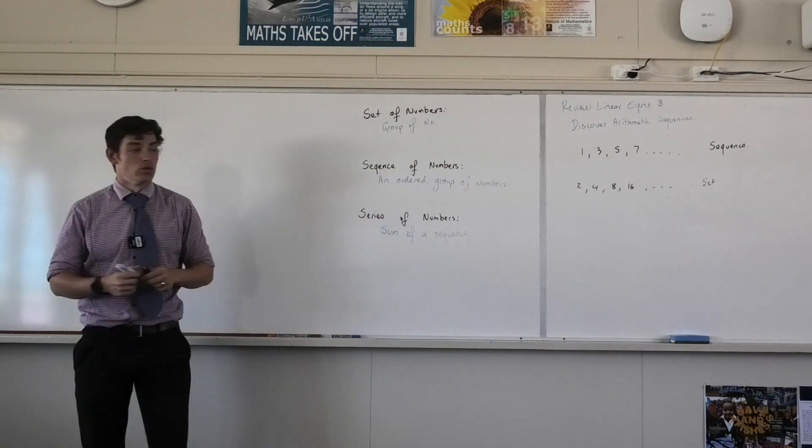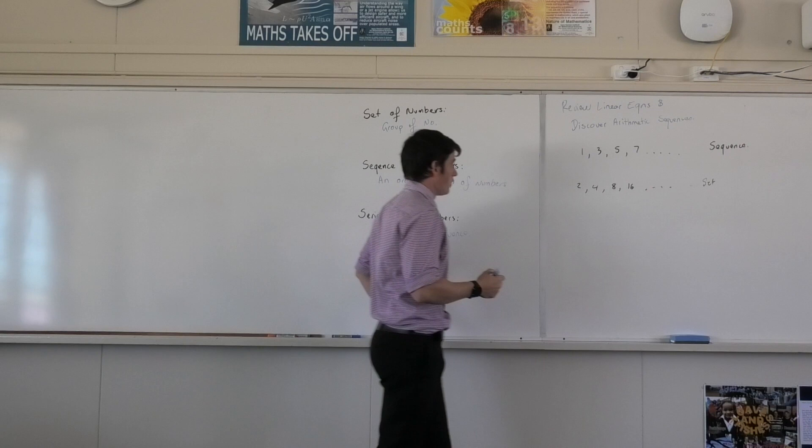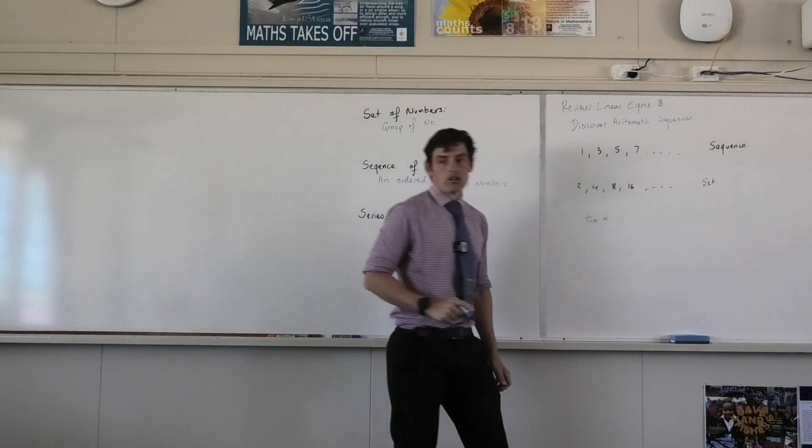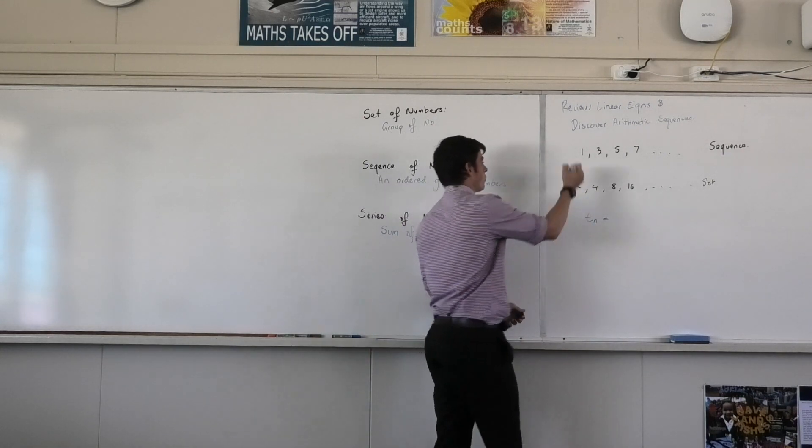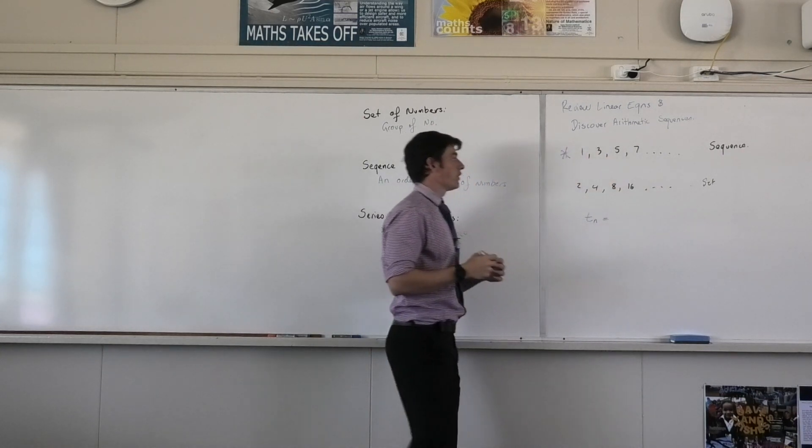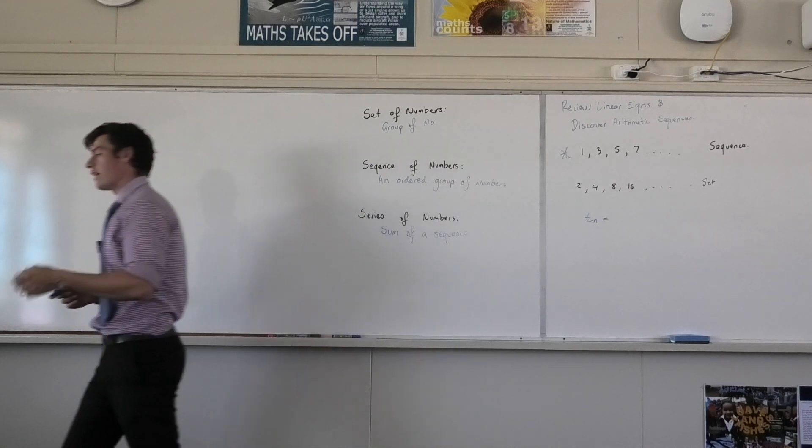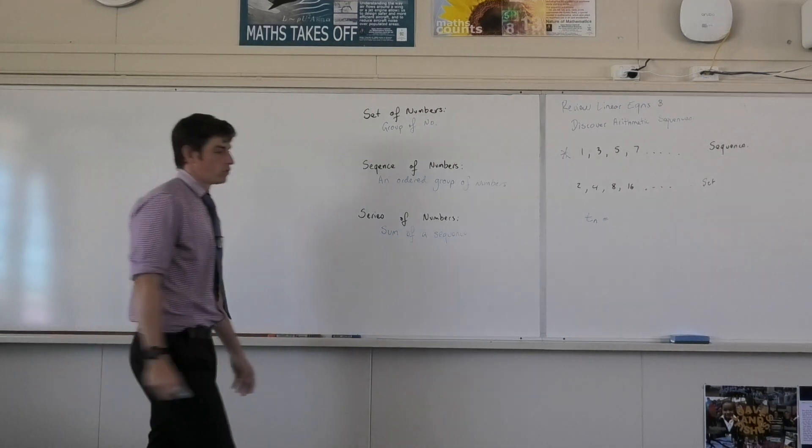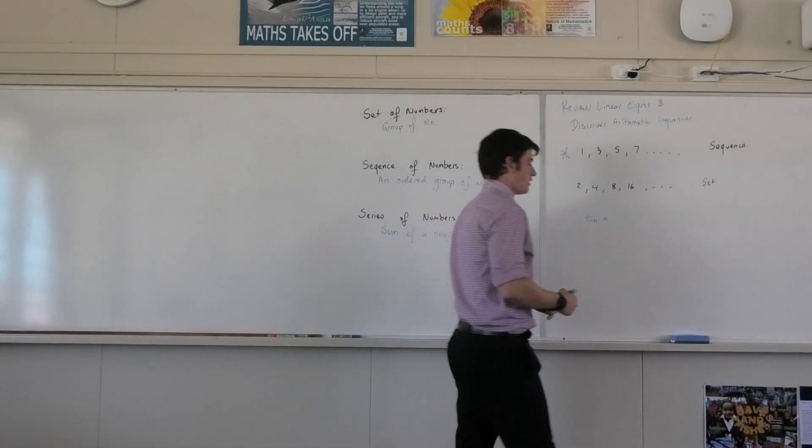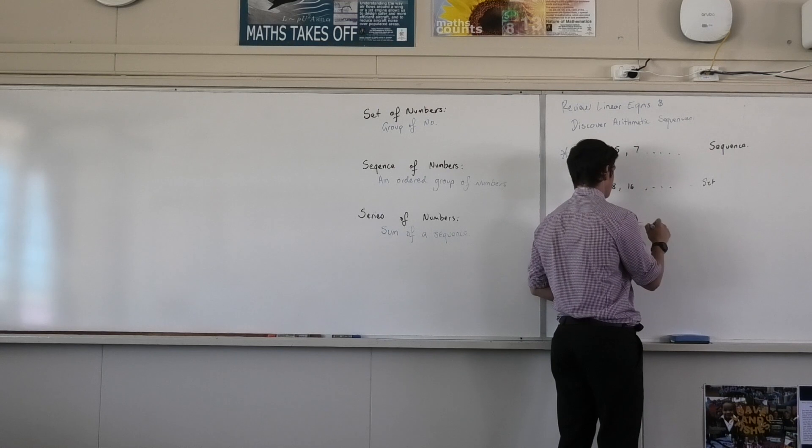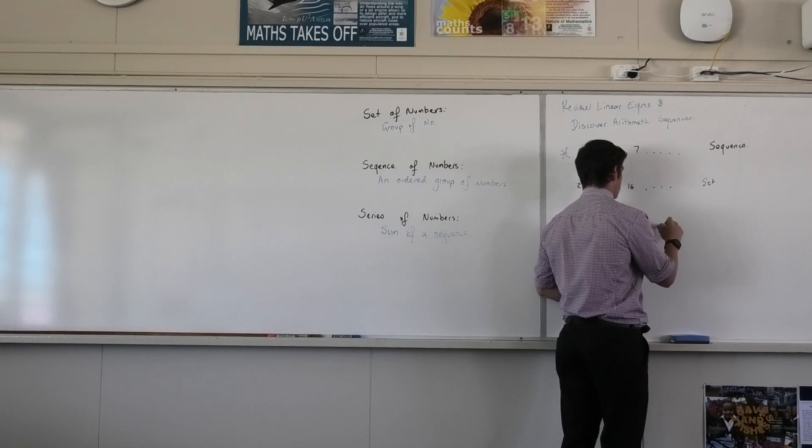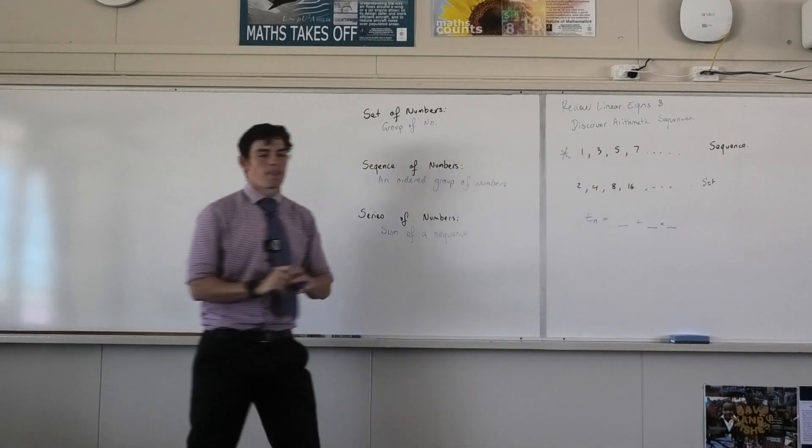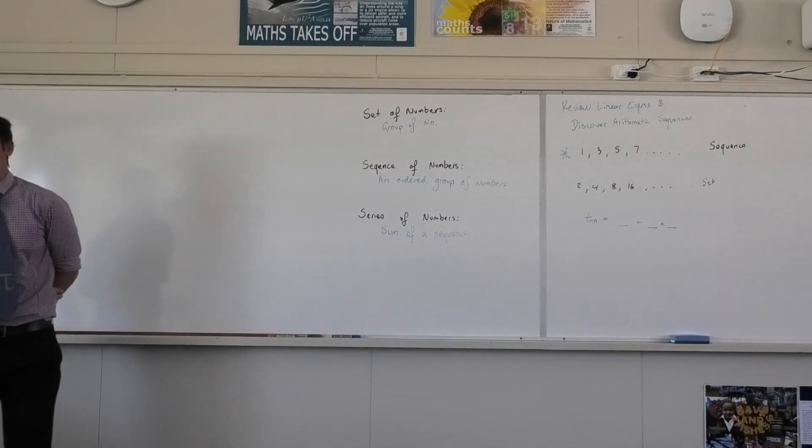So, I want you to create a rule on your own. Now, if I wanted to know what the nth term, term n equals for my first, for this one up here, 1, 2, 1, 3, 5, can you please create an equation for me? Try it. I know I haven't taught you, so I want you to have a go. I'll give you a hint. I think it's something plus something times...